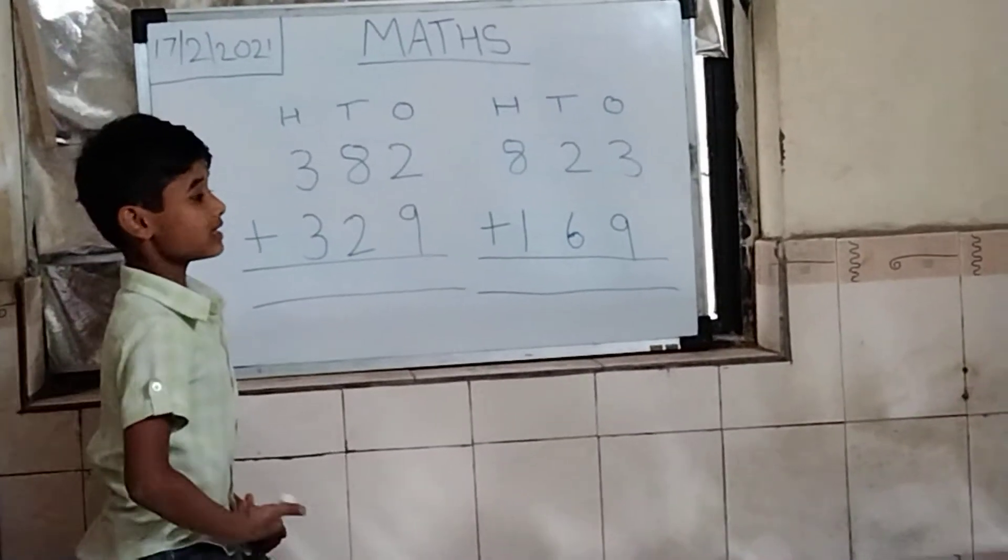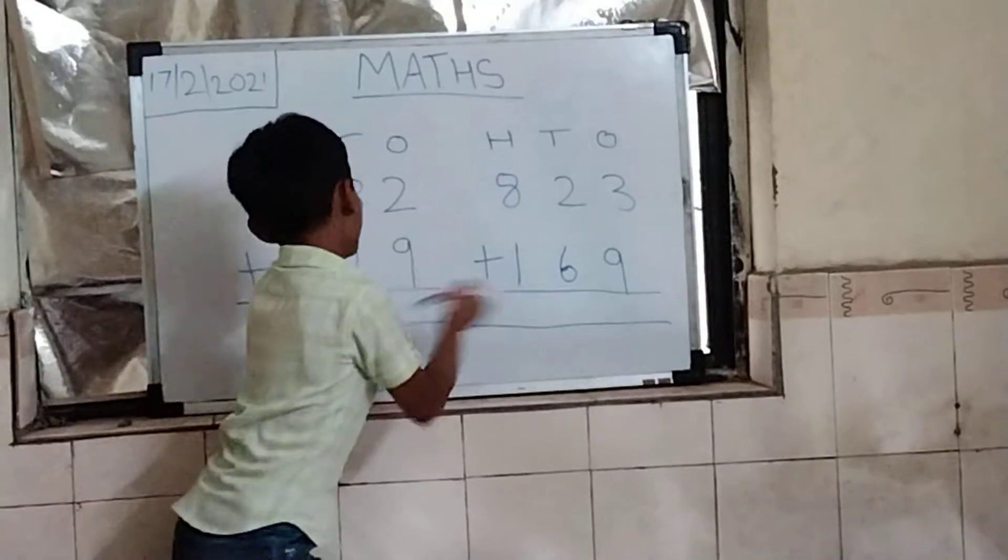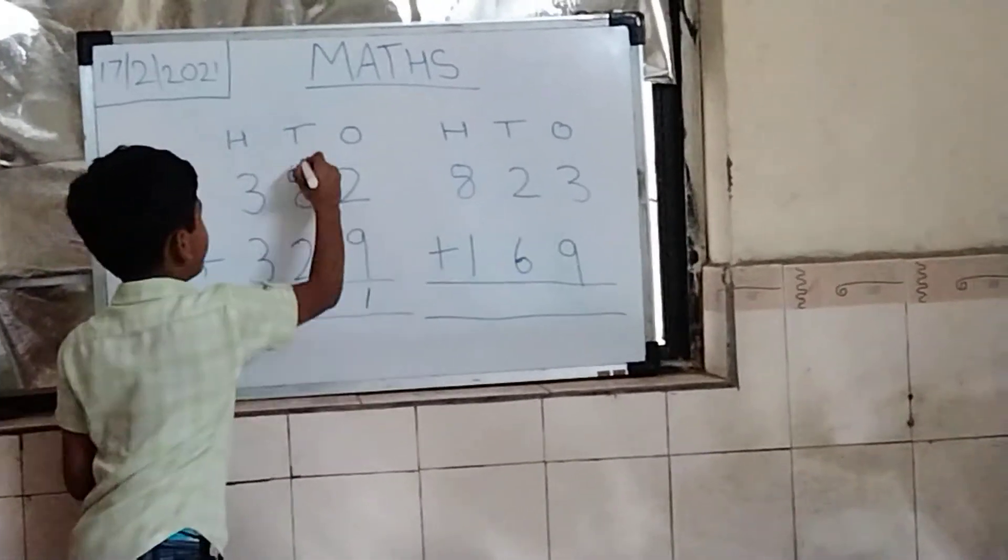2 plus 9 is 11. 1 write down and 1 carry.